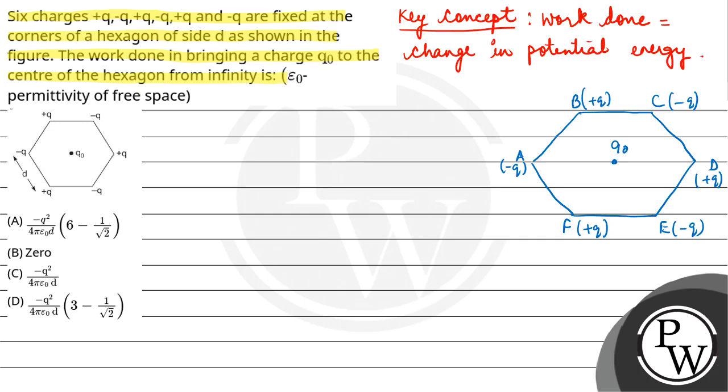This is a regular hexagon, so all the distances from each vertex to the central point O will be equal to D.